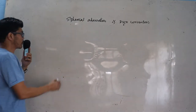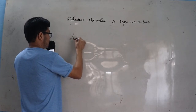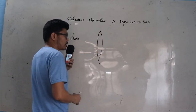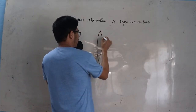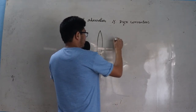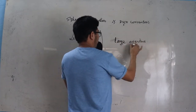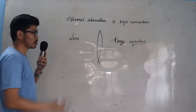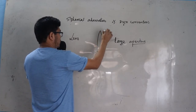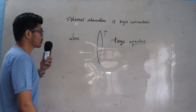Let us see what is this spherical aberration. Sometimes the lens can come in a bigger size. A bigger size lens — we use a simple word, we call it large aperture. Large aperture simply means a bigger size lens.